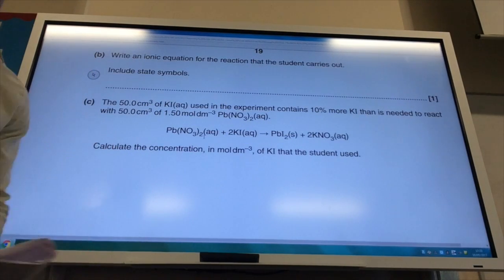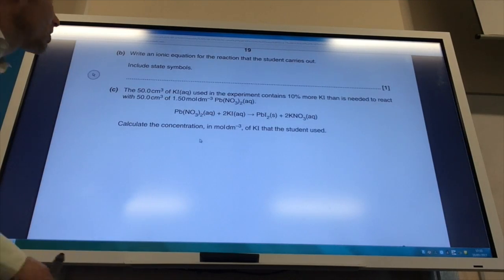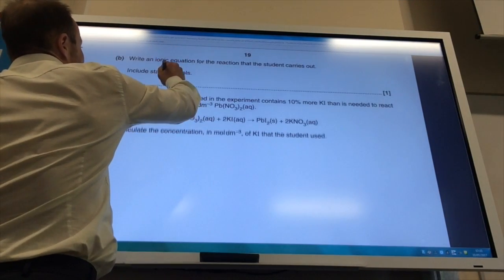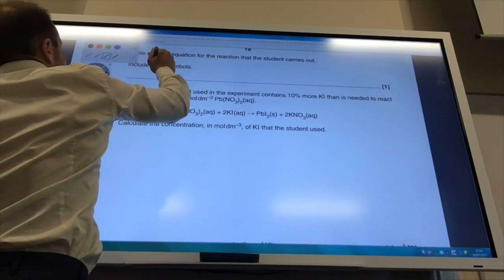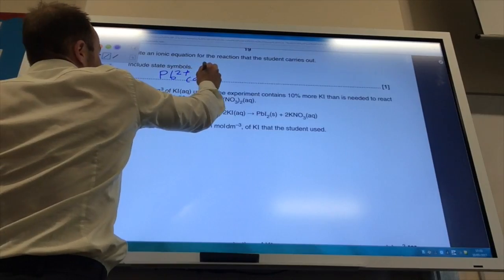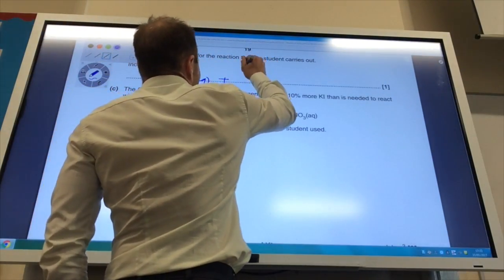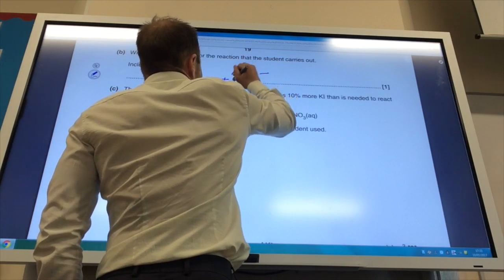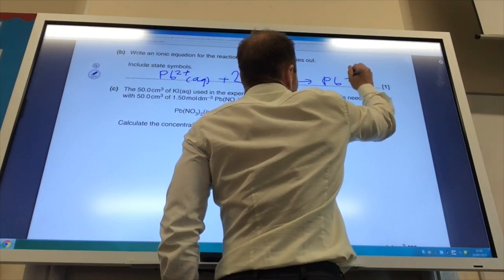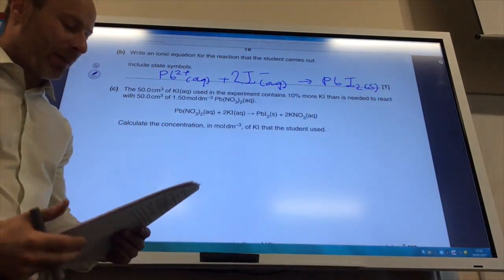Right, okay, so let's do another ionic equation. So an ionic equation for the reaction takes place. We have got Pb ions, so Pb2+ aqueous. They are reacting with iodide ions and I need two of them, aqueous, to give me PbI2 solid. All the other ions are spectator ions.